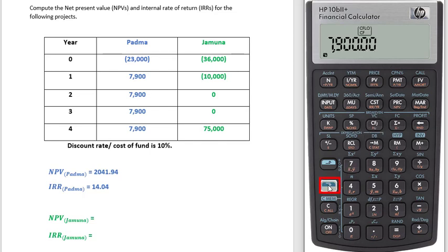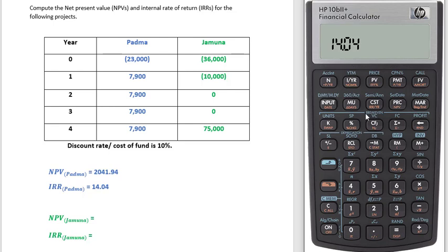Then press Shift and this IRR button. So as you are calculating only IRR, you don't need any discount rate or any funding rate. This is how you can calculate IRR when you want to calculate it individually.